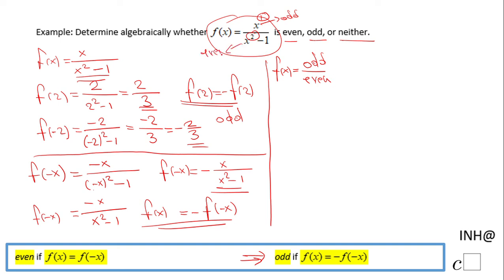Similarly, if you have even over odd, you get an odd function. This rule also works for multiplication: if you multiply an odd and an even, you get an odd; if you multiply an even and an odd, you get an odd function.